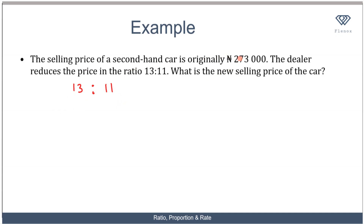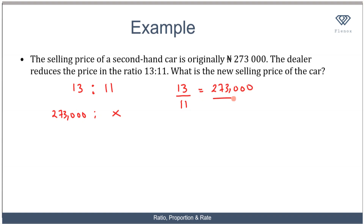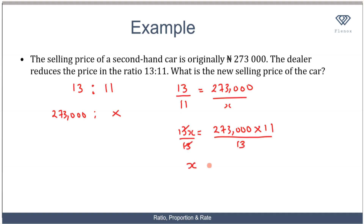The original price, which was in ratio 13, corresponds to 273,000 Naira. So what value of X would I put in here such that when I simplify this ratio, I'm going to result in 13 ratio 11? A way to do this is to express both of them in fractional terms: 13 over 11 is equal to 273,000 over X. Cross-multiplying, 13X equals 273,000 times 11. Dividing both sides by 13, X equals 231,000 Naira. So the new selling price of the car has been reduced from 273,000 to 231,000.